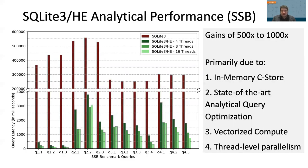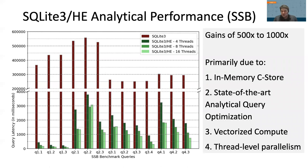We discuss SQLite 3 HE's analytical query processing performance. The brown bar represents SQLite 3's performance for each of the SSB queries, while the different green bars correspond to SQLite 3 HE with different thread counts. Our analytical query processing results are striking, with a 500 to 1,000 times performance gain depending on the query when compared to naive SQLite 3. The acceleration path leverages the current state-of-the-art in analytical query processing techniques, with performance benefits from in-memory columnar store, query optimization, factorized compute, and thread-level parallelism. The HustleDB engine is a re-implementation of QuickStep techniques utilizing Apache Arrow primitives.